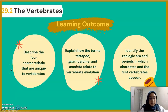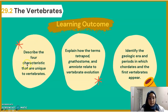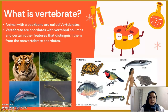Now we will continue with the next subtopic, 29.2, the vertebrates. By the end of this section, you will be able to describe the four characteristics unique to vertebrates, explain how the terms tetrapod, gnathostome, and amniote relate to vertebrate evolution, and identify the geologic era and periods in which chordates and the first vertebrates appeared. Animals with a backbone are called vertebrates. Vertebrates are chordates with vertebral columns, and certain features distinguish them from non-vertebrate chordates.